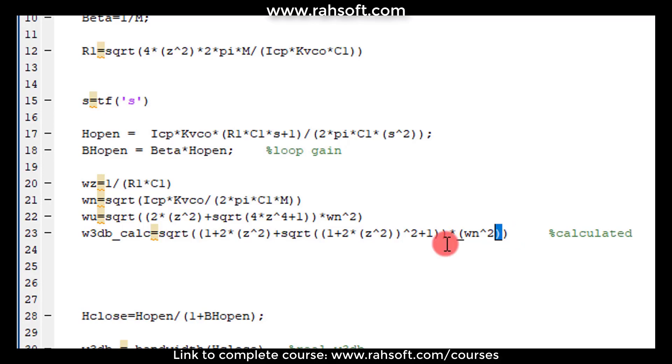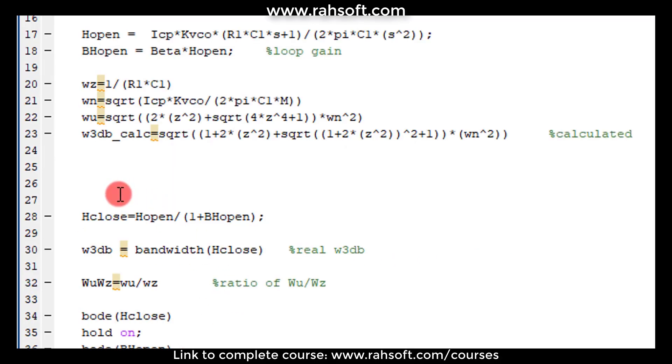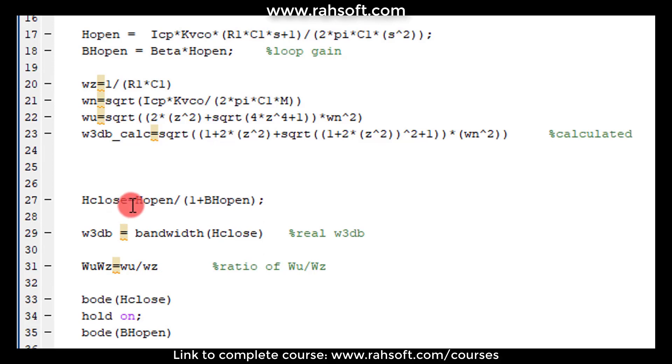So this is the formula I provided if you see here. And then I am making the closed loop transfer function. This is the feedback by making H open over 1 plus beta H open which is loop gain.